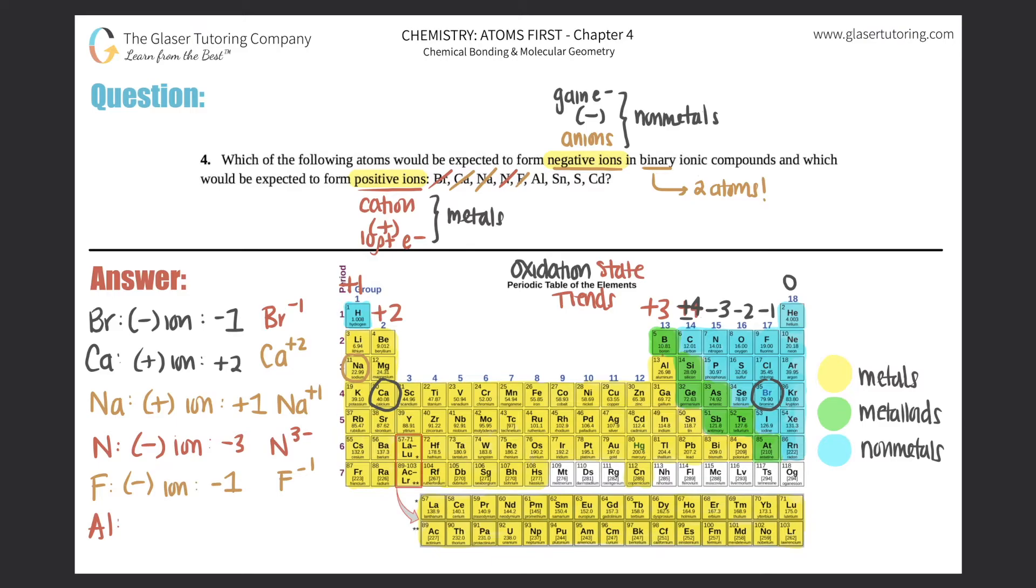Next is aluminum. Aluminum is here in group 13, aka that plus three group, so aluminum would be a positive ion. It makes sense because aluminum is a metal - metals usually are cations, they're usually pluses. More specifically it would be a plus three, and for practice you could put Al with a three plus charge.